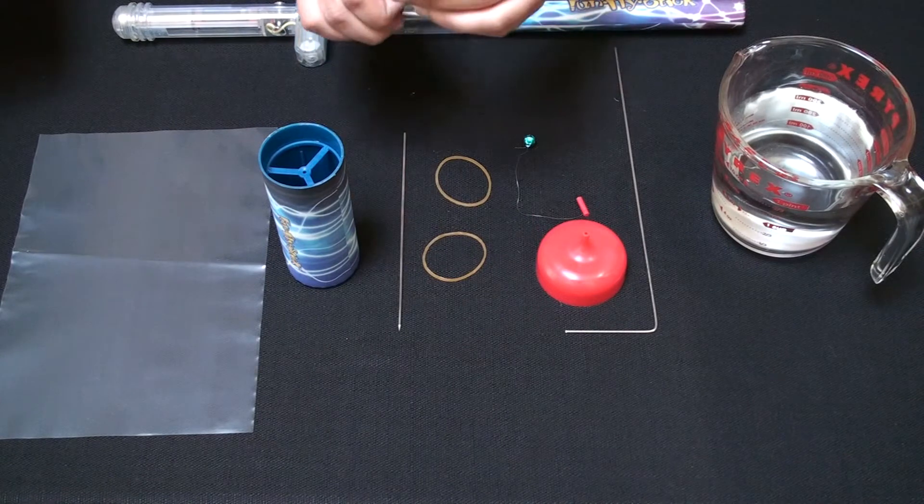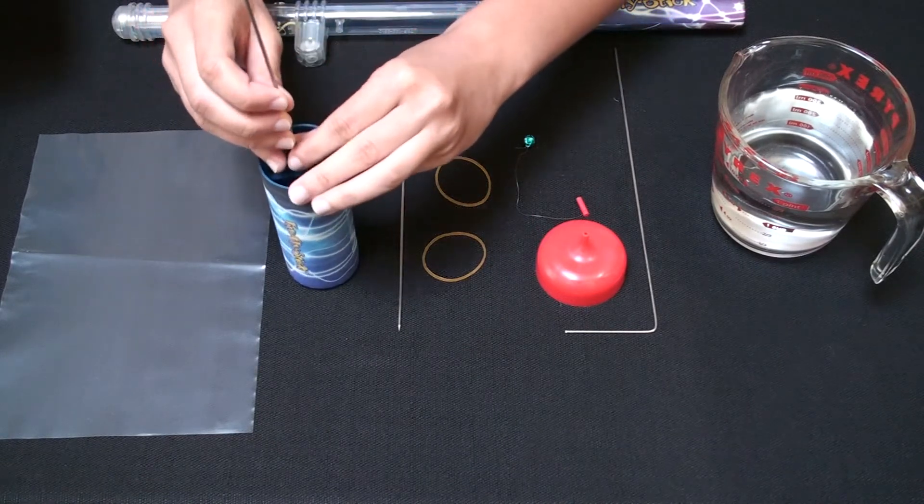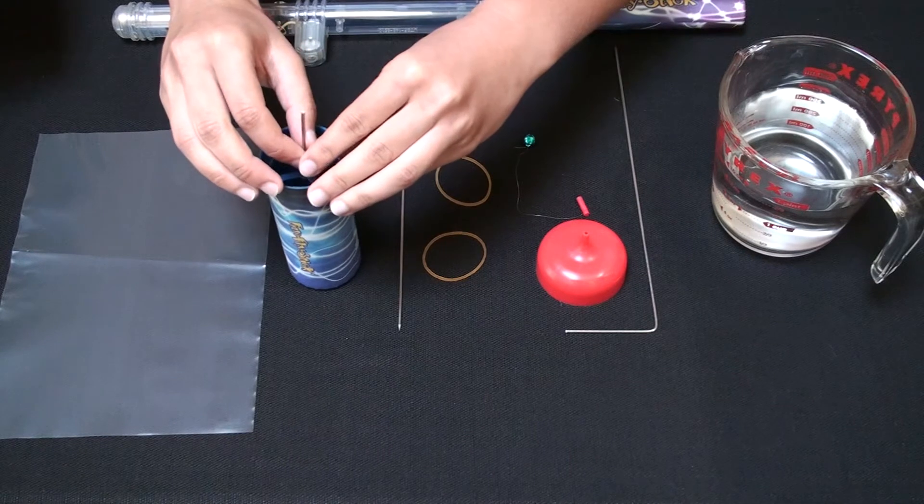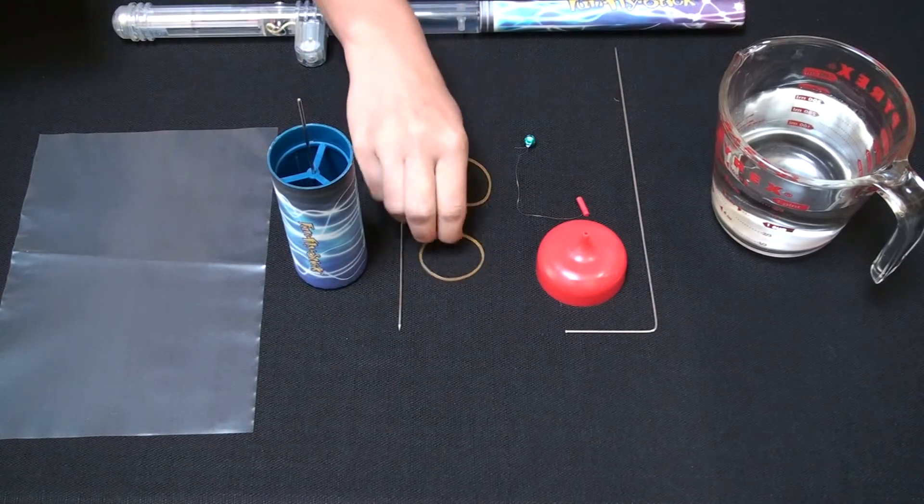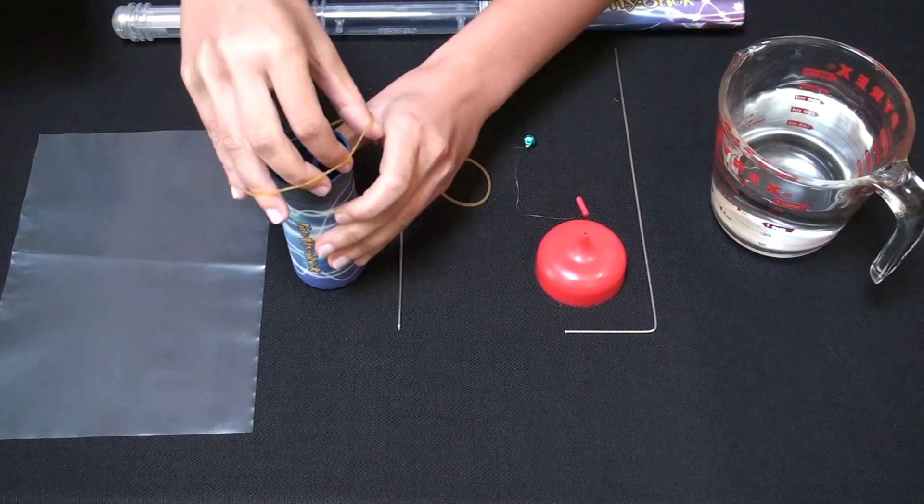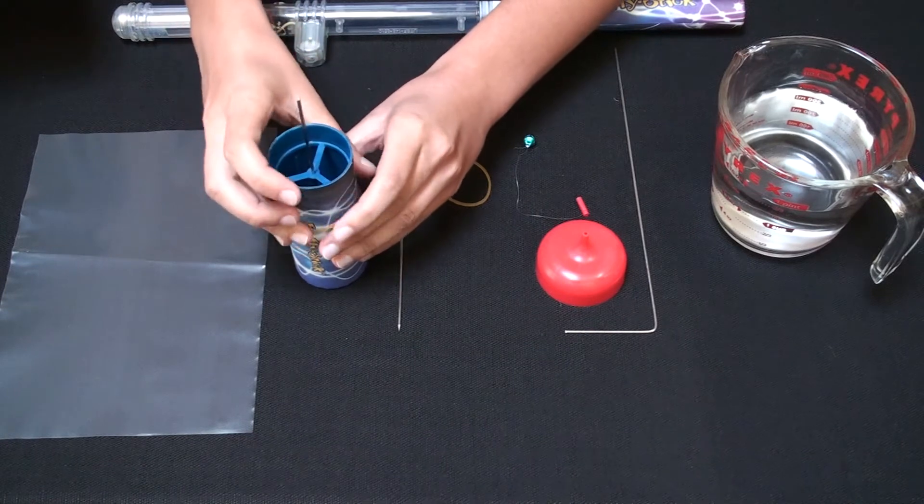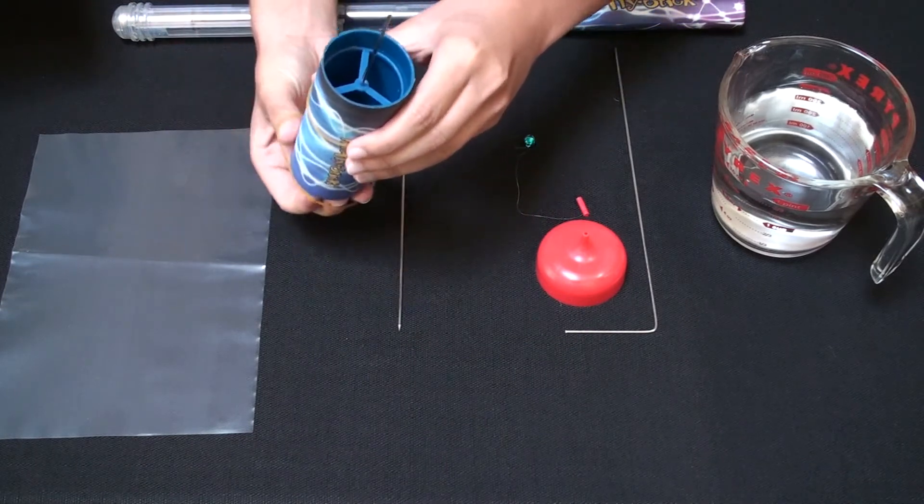Insert one straight pin through the center of the ring located inside the cylindrical container. Put two rubber bands around the cylinder, one close to the top, the other one closer to the bottom.